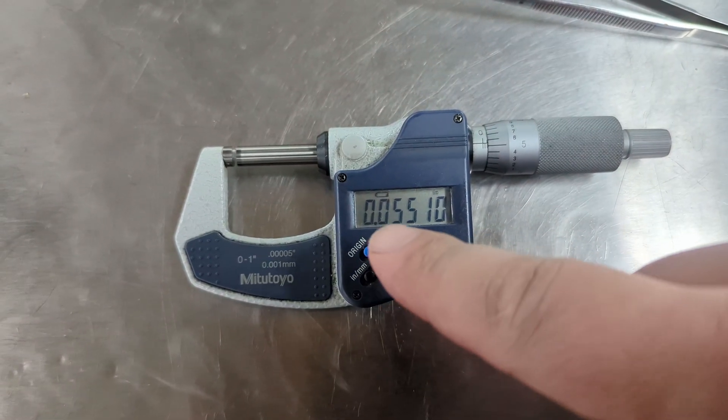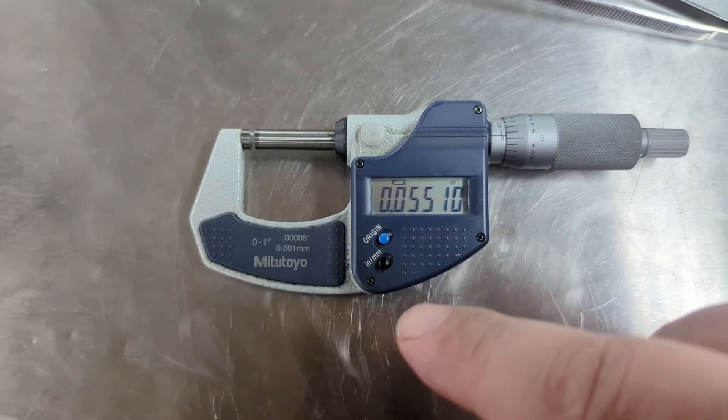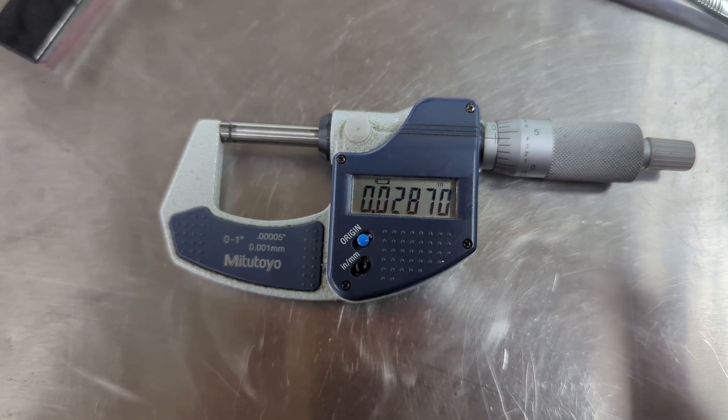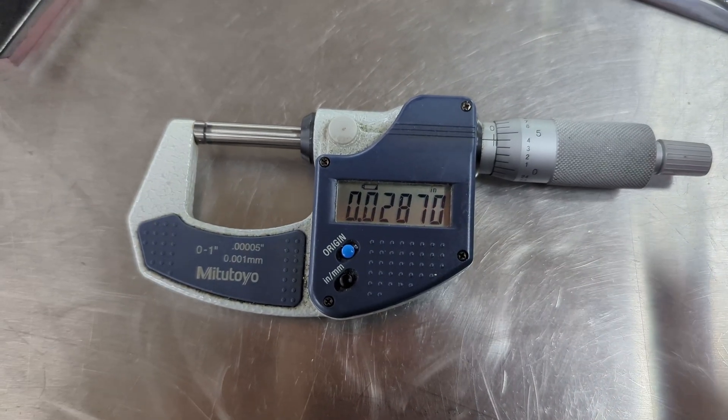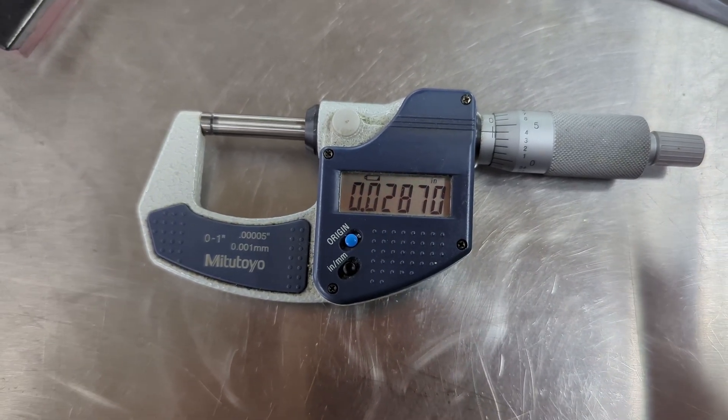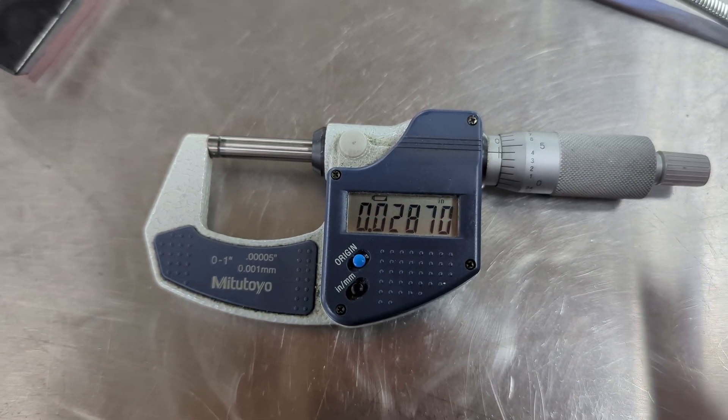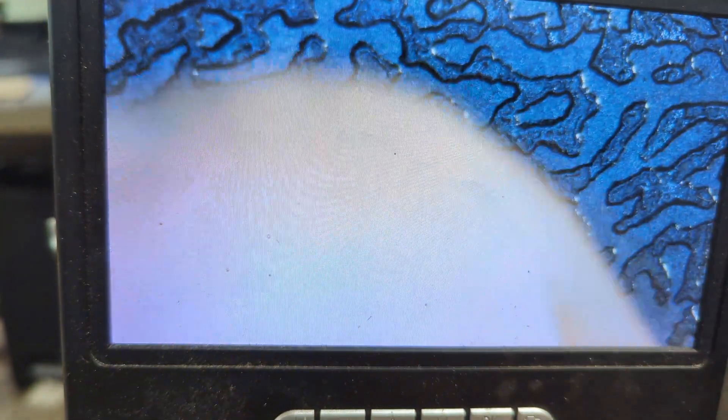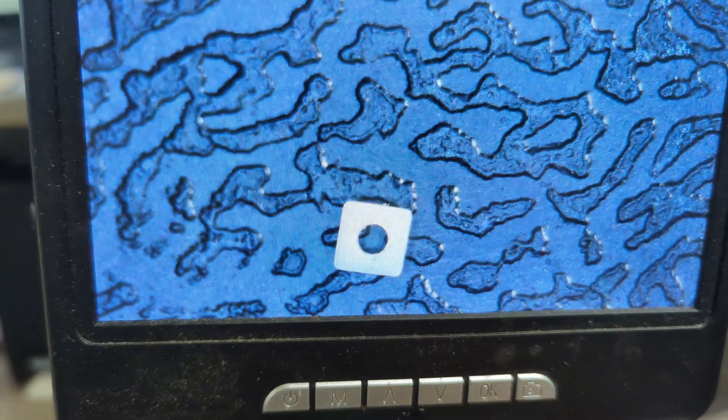So we're one-tenth undersized, which is in spec. After we remove that burr, our thickness is 0.0287. That is 13 tenths undersized. Should be 0.030 on the dot. This is actually out of spec by 3 tenths. I said I removed that burr, and it actually wasn't that difficult. It was just kind of a matter of rolling it between my fingers, and it came off.